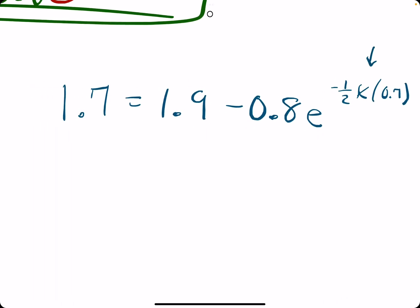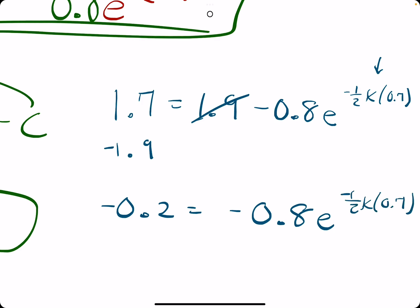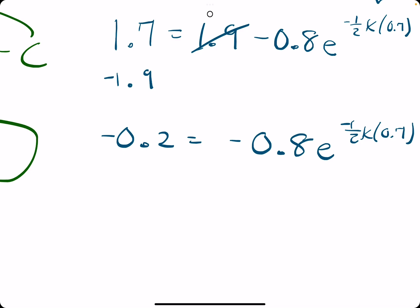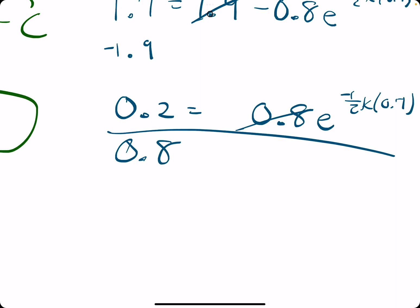So, n equals 1.7 equals 1.9 minus 0.8 e to the negative one-half k times 0.7. And our goal is to isolate k. So, we start by subtracting 1.9 on both sides. That will leave us with negative 0.2 equals negative 0.8 e to the negative one-half k times 0.7. So, we can negate both sides and then divide by 0.8 to eliminate this one. And 0.2 divided by 0.8 is one-fourth. It leaves us with 0.25 e to the rest.